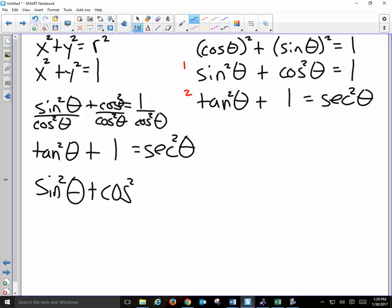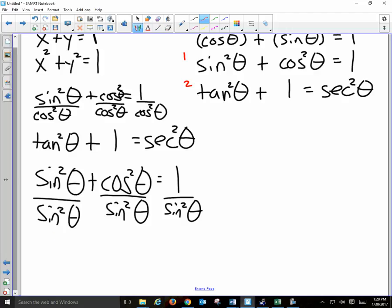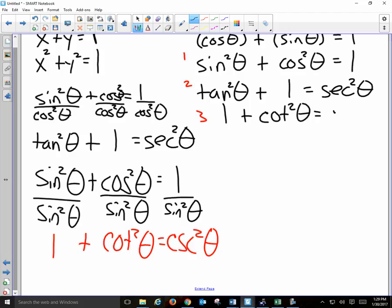Instead of dividing through by cosine, I'm going to divide through by sine. What's sine squared over sine squared? 1 plus cosine over sine. So that's X over Y, cotangent. What's the reciprocal of sine? Cosecant. So you can see that we get a third formula: 1 plus cotangent squared of theta is equal to cosecant squared of theta.